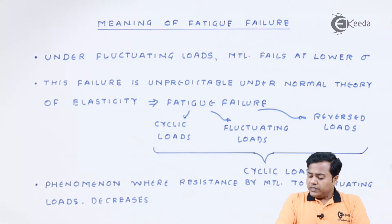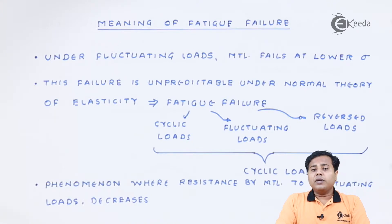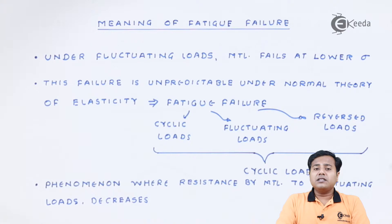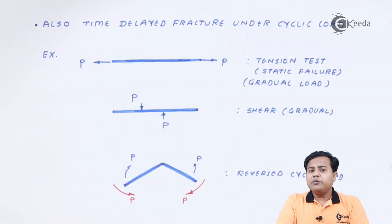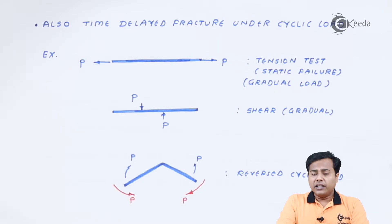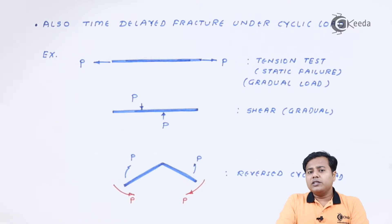Fatigue failure may involve cyclic loads, fluctuating loads, and reverse loads — let's call them all cyclic loads. It is very easy to understand the phenomenon where the resistance by the material to the fluctuating load decreases. In this phenomenon we need to consider the origin of fatigue failure. The phenomenon under which the resistance given by the material or component to the repeated or cyclic loads starts decreasing — that is where the origin of fatigue failure takes place. The second aspect is time: the fracture under cyclic loads is not delayed; it is incorporated at the early stages, and that is the concern.